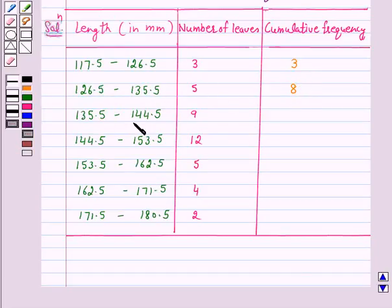For this class, it is 8 plus 9, which is 17. For this class, it is 17 plus 12, which is 29. Then 29 plus 5 is 34, 34 plus 4 is 38, and 38 plus 2 is 40.